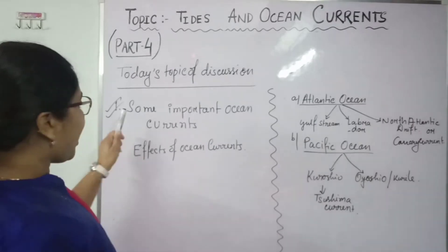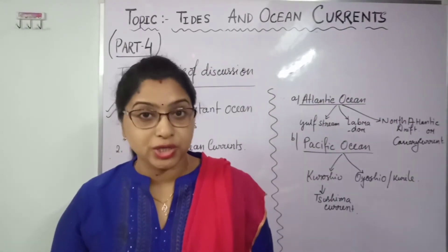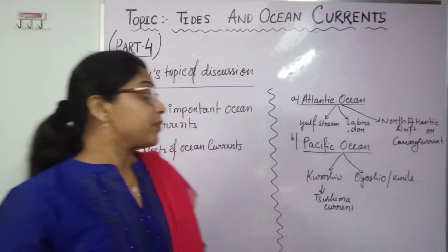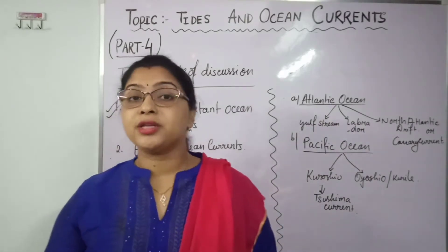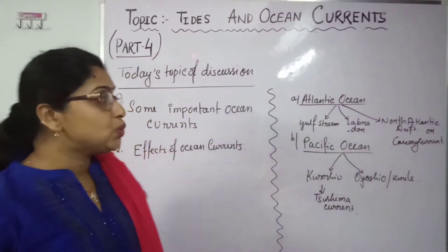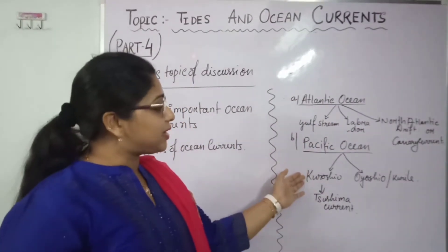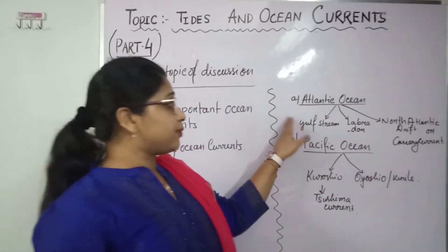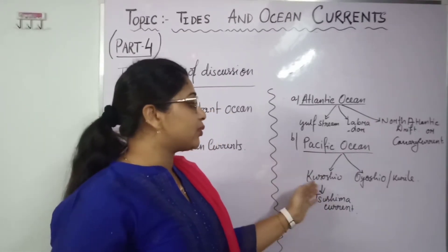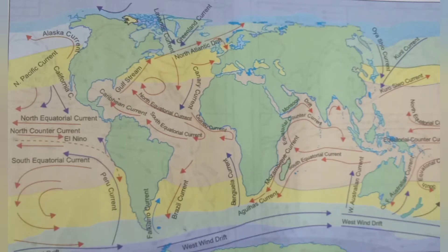All oceans have ocean currents — they can be warm or cold. In our syllabus we will basically cover two oceans: the Atlantic Ocean and the Pacific Ocean. For the Atlantic Ocean we will learn three currents: Gulf Stream, Labrador Current, and North Atlantic Drift or the Canary Current. For the Pacific Ocean we will learn two: Kuroshio and Oyashio (Kuril) Current.